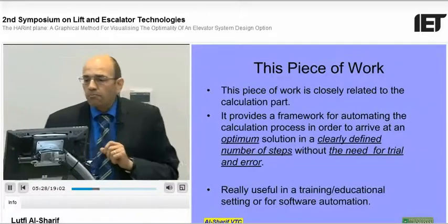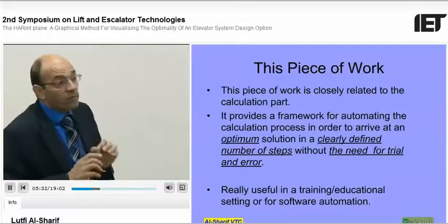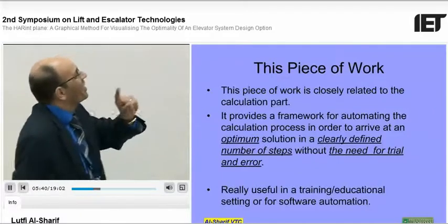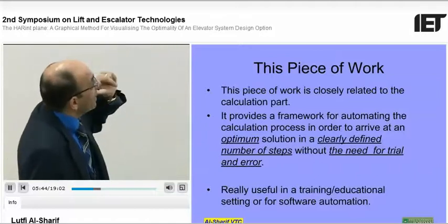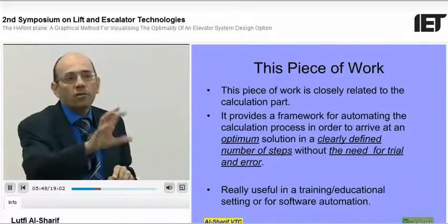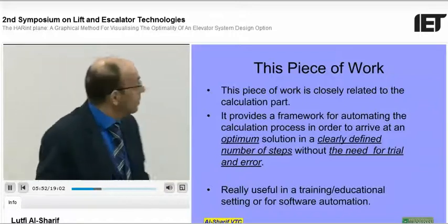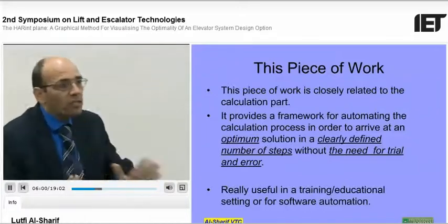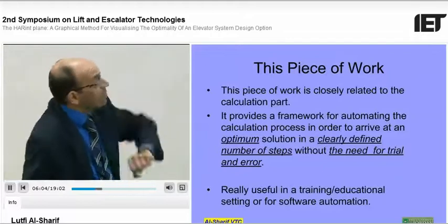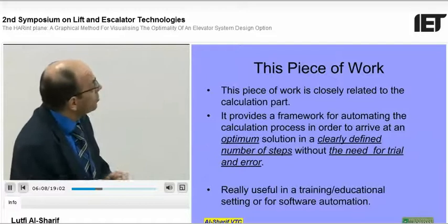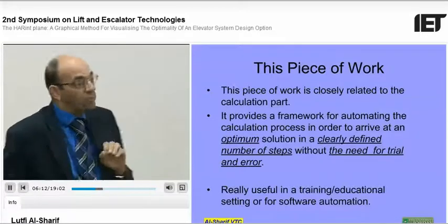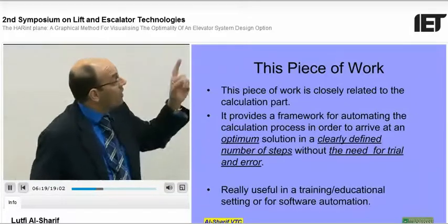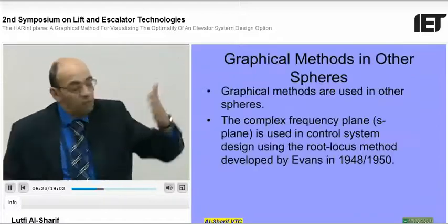So where does this piece of work fall? Why this piece of work? It's closely related to the calculation part — it gives us a methodology. It gives you an optimum solution in a clearly defined number of steps. What many people who start traffic analysis struggle with: they come up with an answer but don't know where to go next. Is this a good answer? Is this an optimum answer? The experts would say they know where to move, but for people in a training course who've never done traffic analysis, this gives them a clearly defined step. It's ideal for training, education, and software automation.